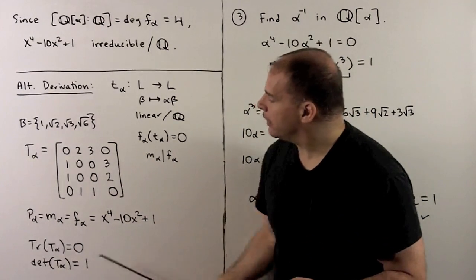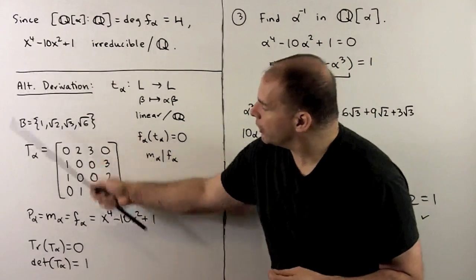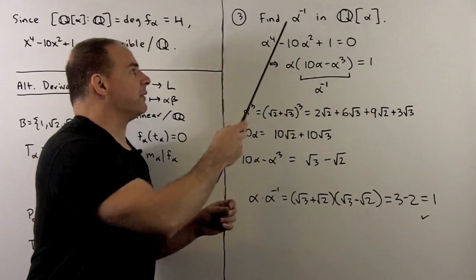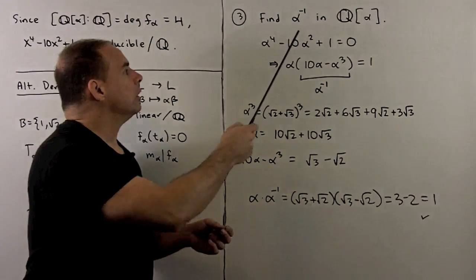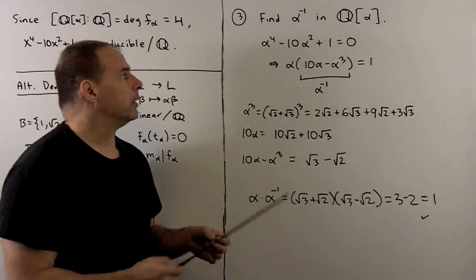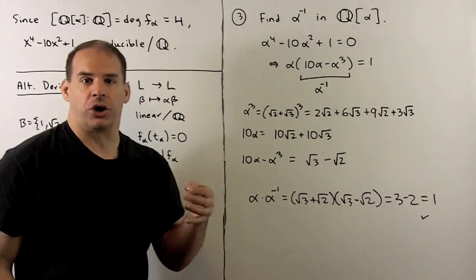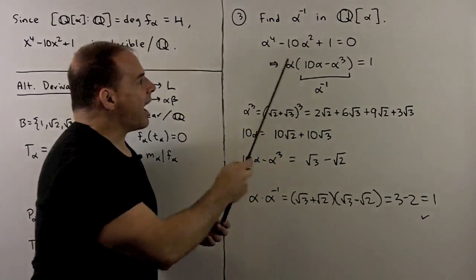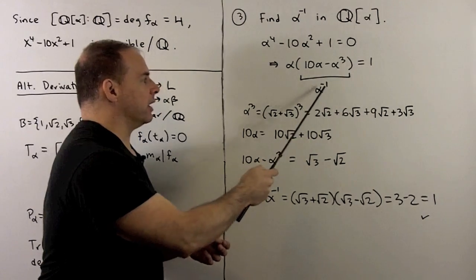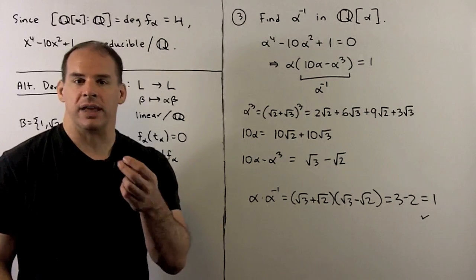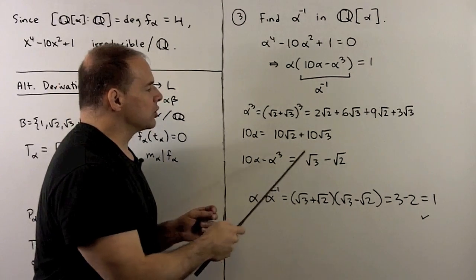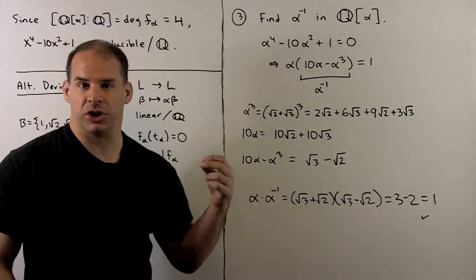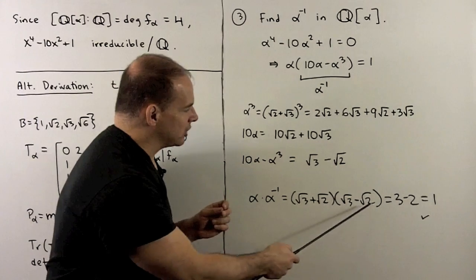We could have proceeded through this part exactly as we did in the previous example — I leave this here for you to check the work. For the final part, I want to express alpha inverse as a polynomial in alpha over the rationals. We use f_alpha: evaluating at alpha gives zero, so α⁴ − 10α² + 1 = 0. Rearranging, leaving 1 on one side and moving the α⁴ and α² terms to the other side, then factoring out an alpha gives alpha times something equal to 1, so that something must equal alpha inverse. Substituting in for alpha, we get alpha inverse equal to √3 − √2, which is what we'd get by rationalizing 1/(√3 + √2) using the conjugate. Checking confirms we get 1, as expected.